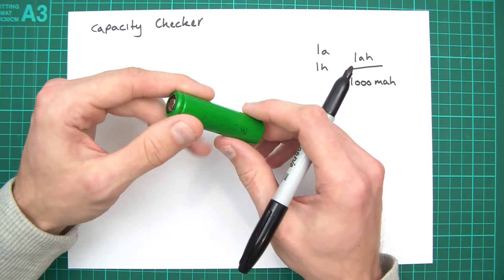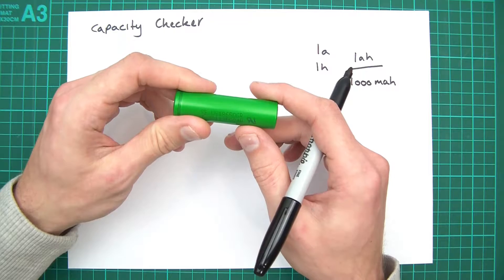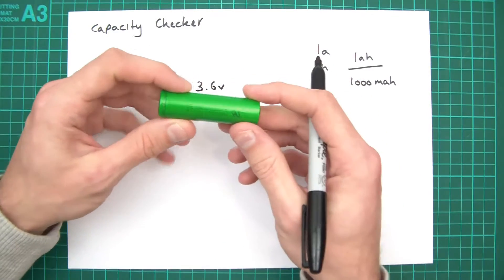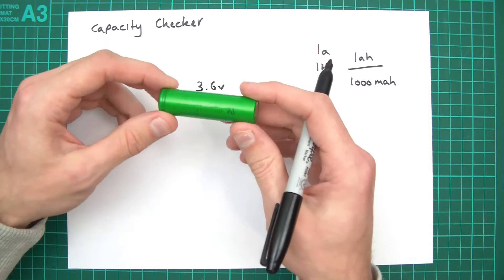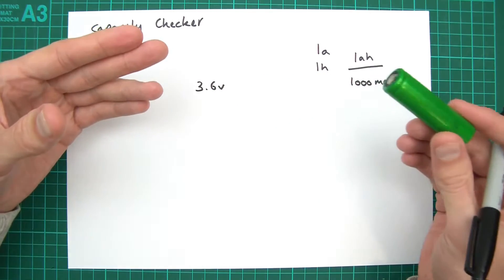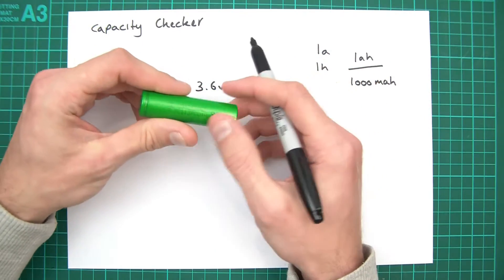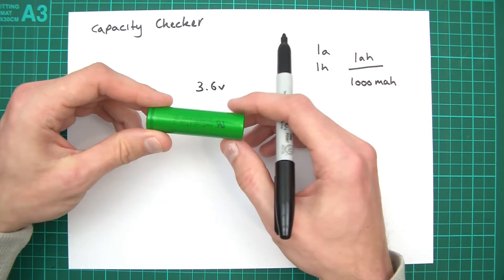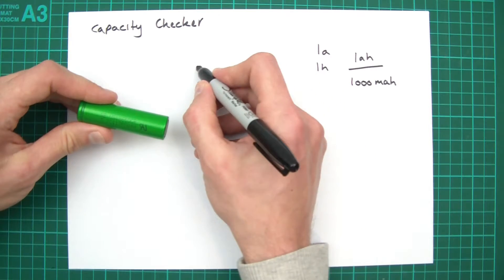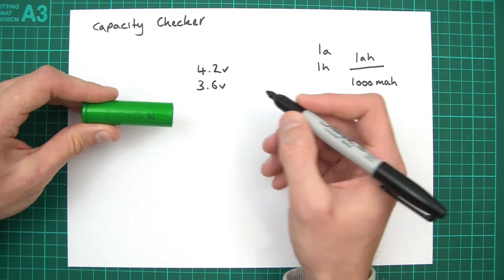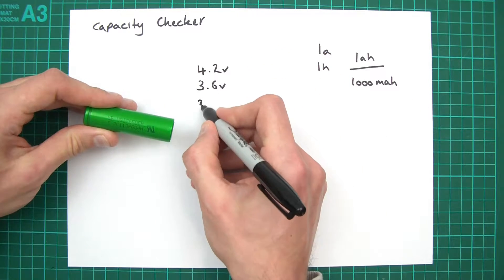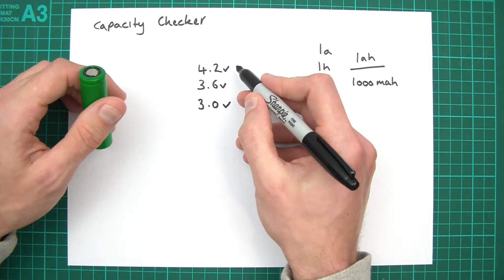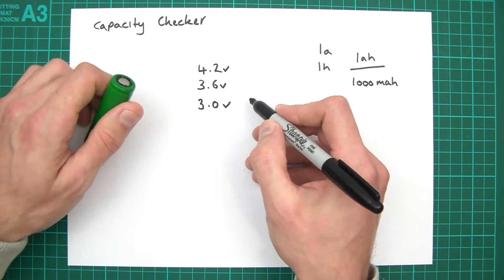With lithium-ion cells, they have a nominal voltage, a charging voltage, and an empty voltage. The nominal voltage is usually 3.6 volts — that's the voltage you expect the cell to be, or the voltage of what it's supposed to power. To power a 3.6V device, the cell needs to be charged higher, so you charge it at 4.2 volts. It then drops down until it reaches 3 volts, at which point you'd take the cell out. So: 4.2V is fully charged, 3.6V is half charged, and 3V is empty.